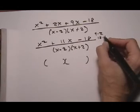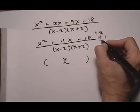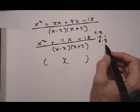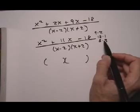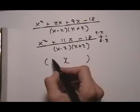18 times 1, that's not going to work. 6 times 3, that's not going to work either. So it looks like we're not going to get factoring to work here.